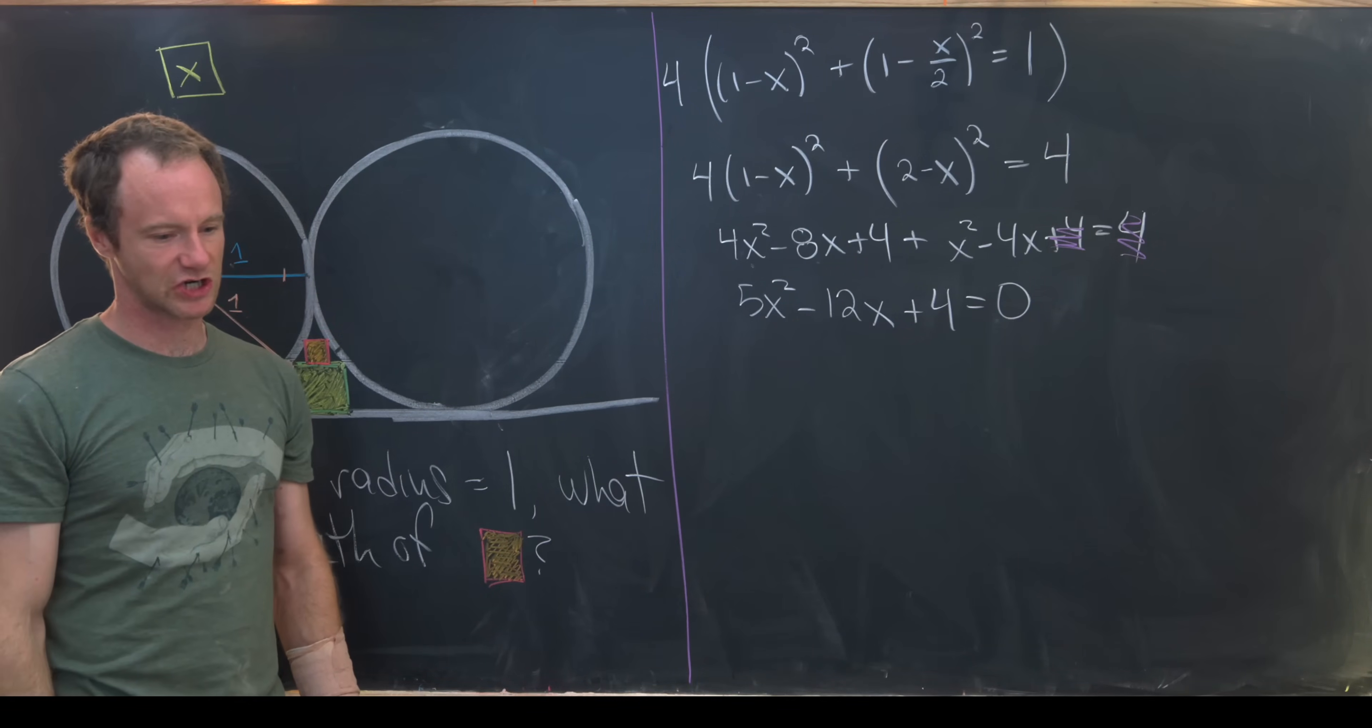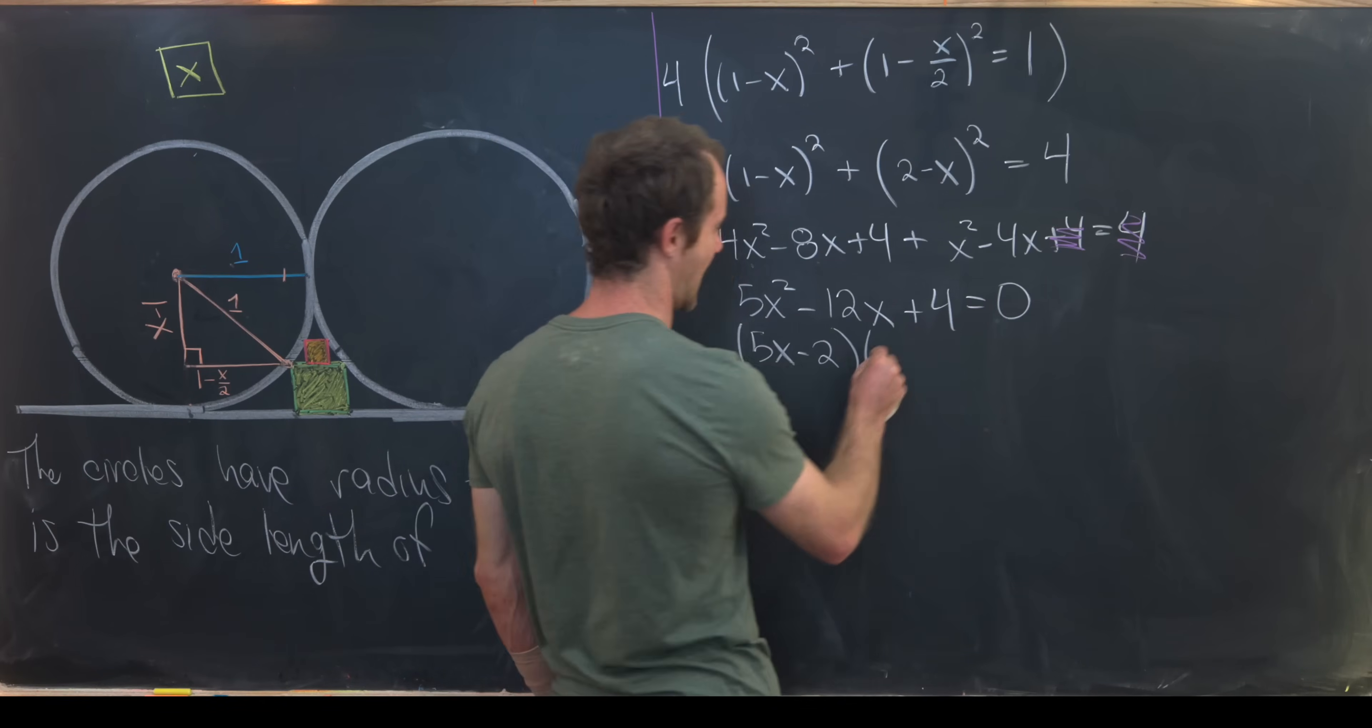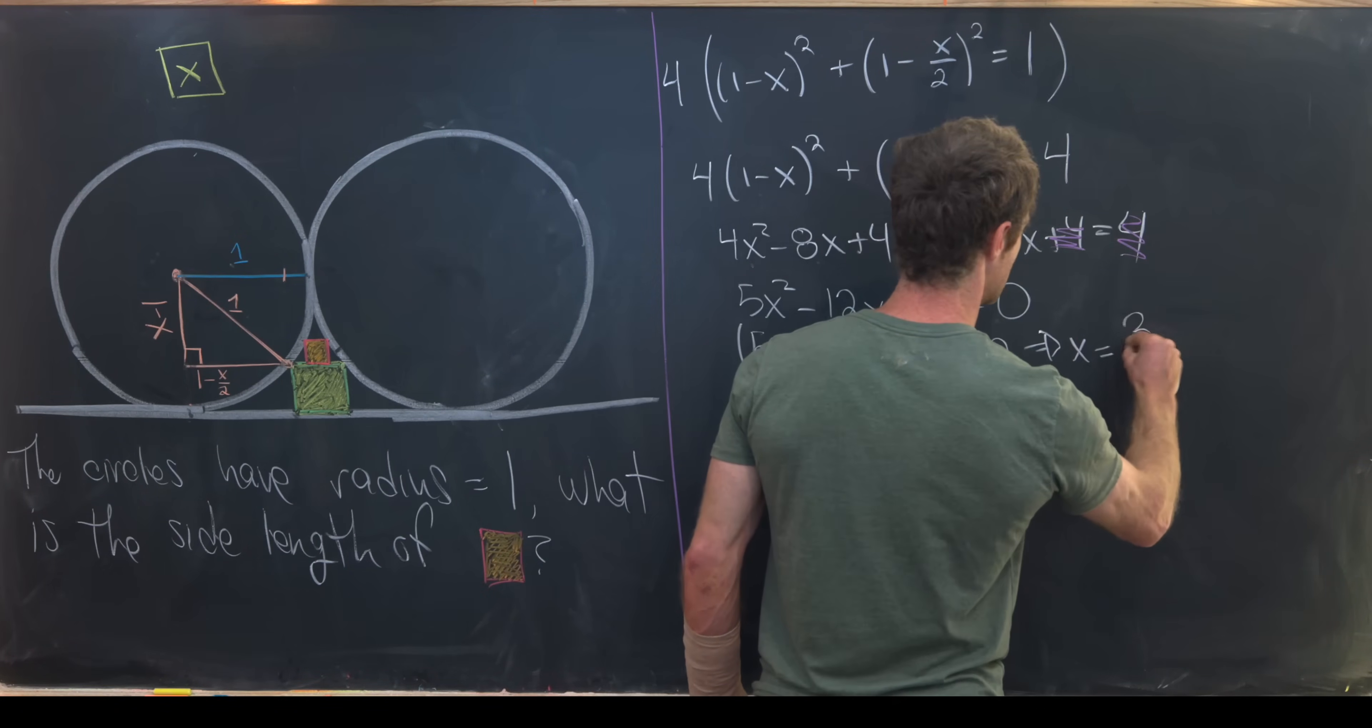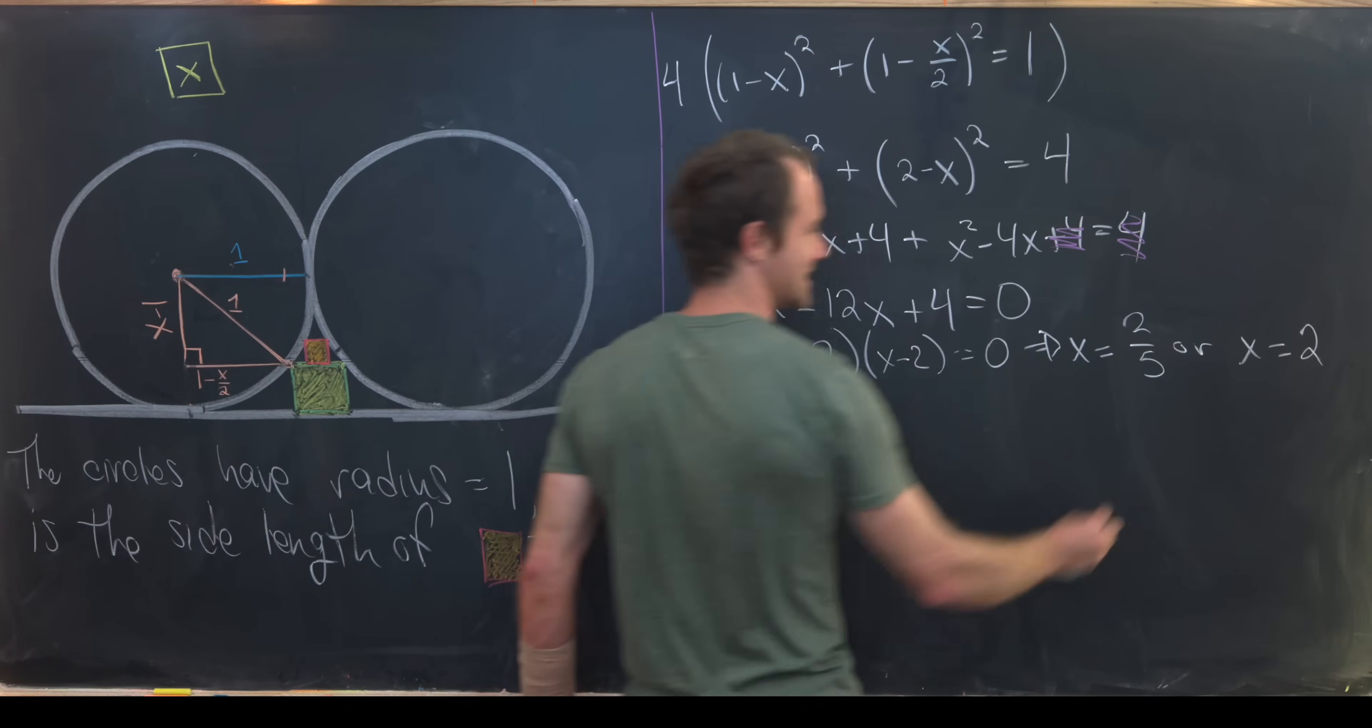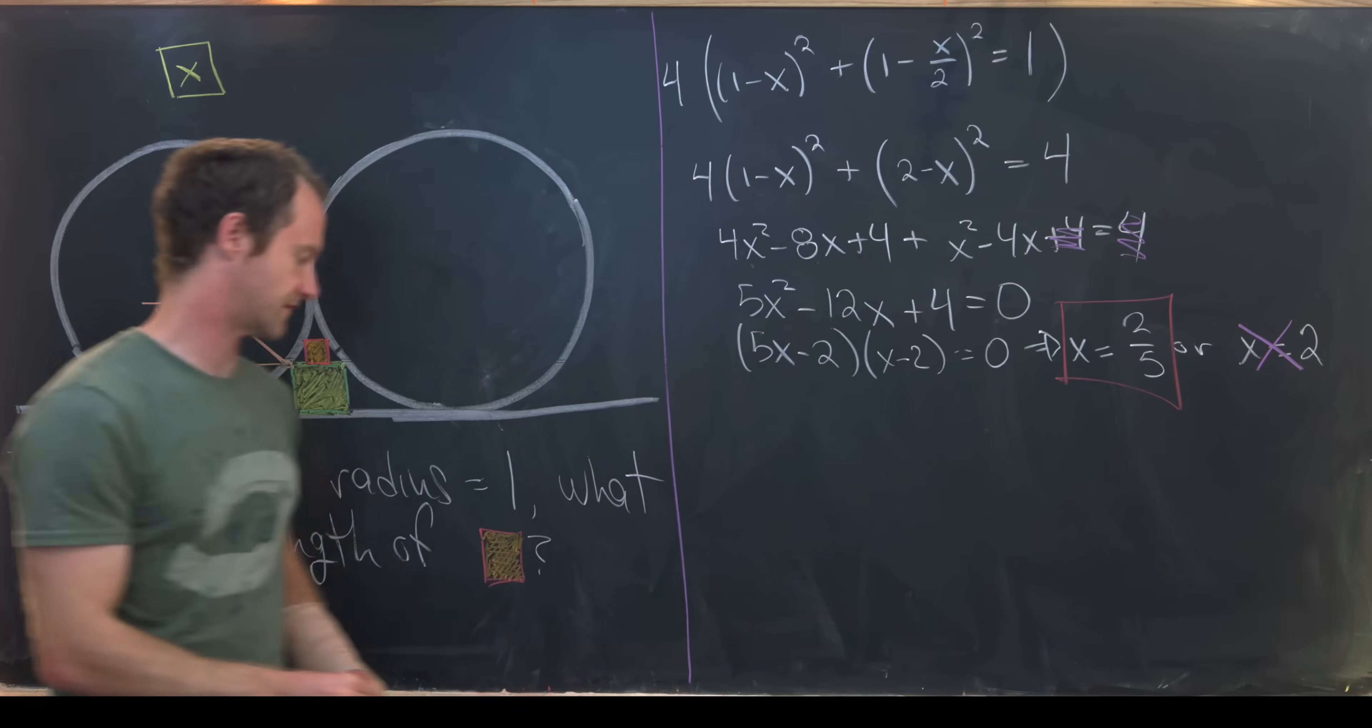Now this might seem like we need to use the quadratic formula, but this is in fact factorable. This factors as (5x - 2)(x - 2). Great. So that tells us that x is equal to 2/5 or x is equal to 2. Given the fact that we're sandwiching this yellow square in between two circles of radius 1, that means it's impossible for the side length of that square to be 2. So in other words, we know that the side length of this square must be 2/5.